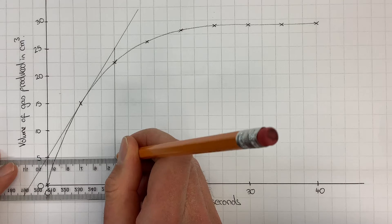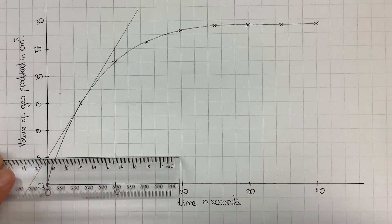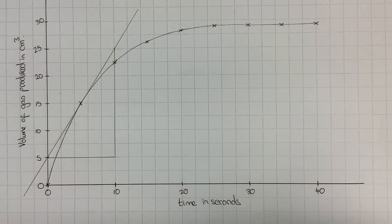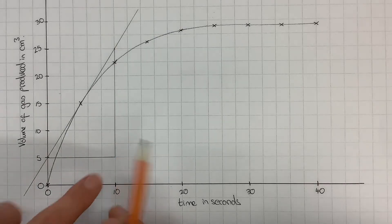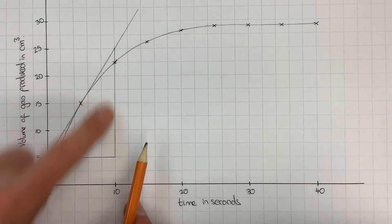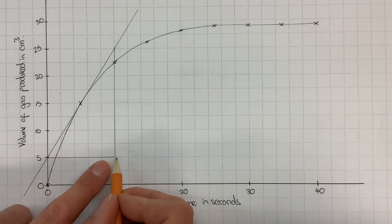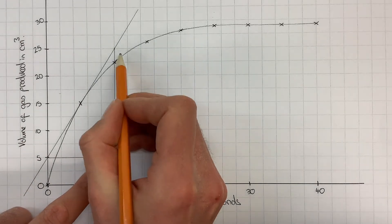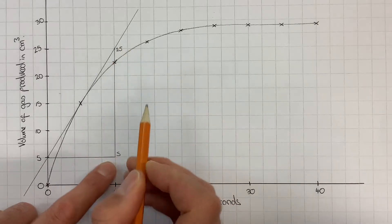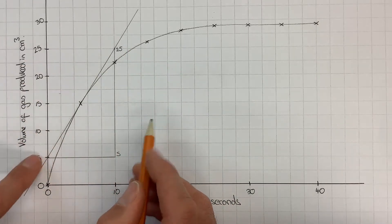Let's draw in my triangle. Once I've drawn in my triangle, I need to first of all look at how much the vertical changes by and label that up. The volume of gas produced went from 5 up to 25, so the change in that volume of gas would be 25 minus 5, which would give me 20.